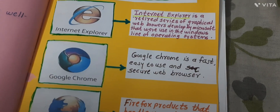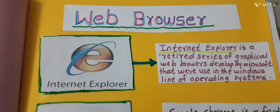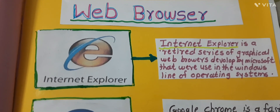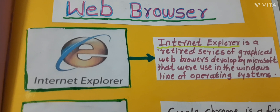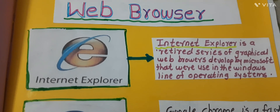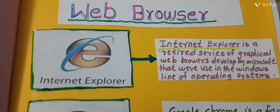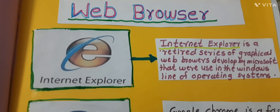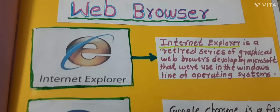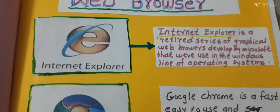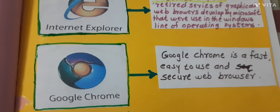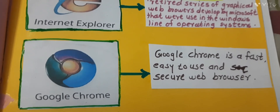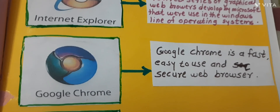First, Internet Explorer. Internet Explorer is a retired series of graphical web browsers developed by Microsoft that were used in the Windows line of operating systems. Number two, Google Chrome is the fast, easy to use, and secure web browser.